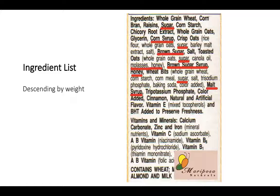Our bodies process the donut and apple very differently. The donut raises blood sugars very high, whereas the apple won't raise it as much because of the fiber, which slows down the absorption of those sugars. That's why we want to consume more naturally occurring sugars and limit added sugars. The 2015–2020 Dietary Guidelines tell us to limit total calorie intake to less than 10% coming from added sugars.